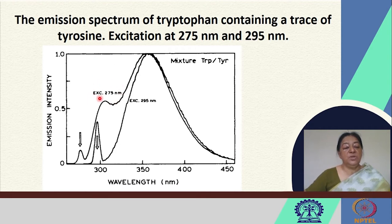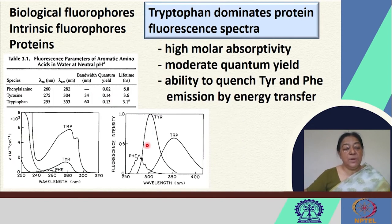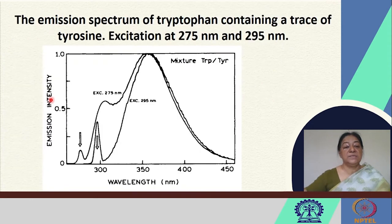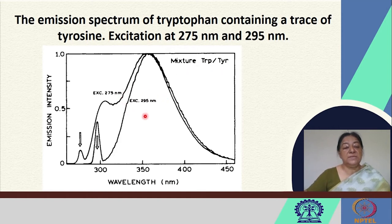The emission spectrum of tryptophan with a small content of tyrosine can be seen at specific excitation wavelengths. At an excitation wavelength of 275 nanometers, there is a possibility of exciting both tyrosine and tryptophan, so the observed emission intensity will be a mixture of both. The common method is to excite the protein at 295 nanometers so that we do not see any interference from the tyrosine residue.